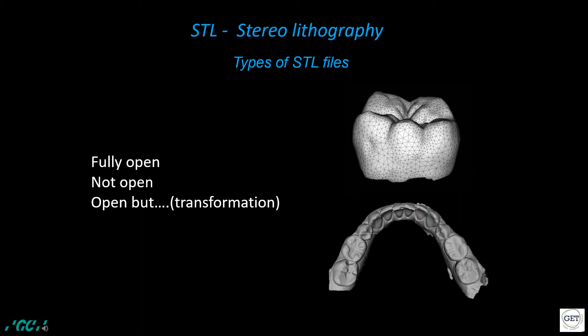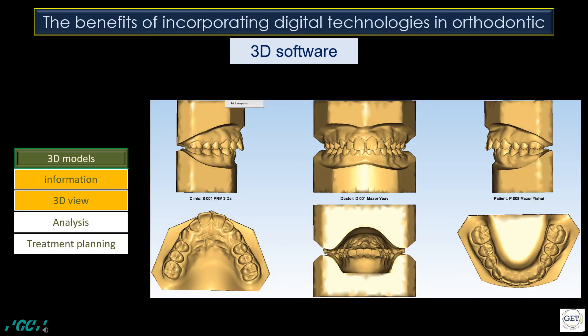The scan result is an STL file. This digital file is later processed in designated 3D software for different procedures, including orthodontics. The STL file is preferred to be an open file, in order to be used with any software without requiring any conversion process, which might be a source of inaccuracies. Unfortunately, some companies still limit their appliances to certain software only, or require orthodontists to use a specific appliance to use their products. The orthodontic 3D software uploads the 3D scan to create the 3D model of the patient, opening the door to impressive amounts of information for viewing, demonstrating, and analyzing to plan the best treatment option.